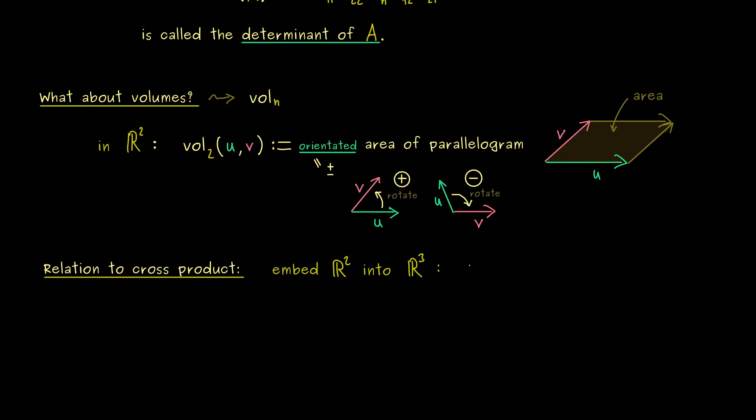This means for the vector u above we can define a new vector u tilde. And it has the same components as u for the first and second component but 0 for the third component. And of course the same we can do with v. So we have v1, v2, and then 0.